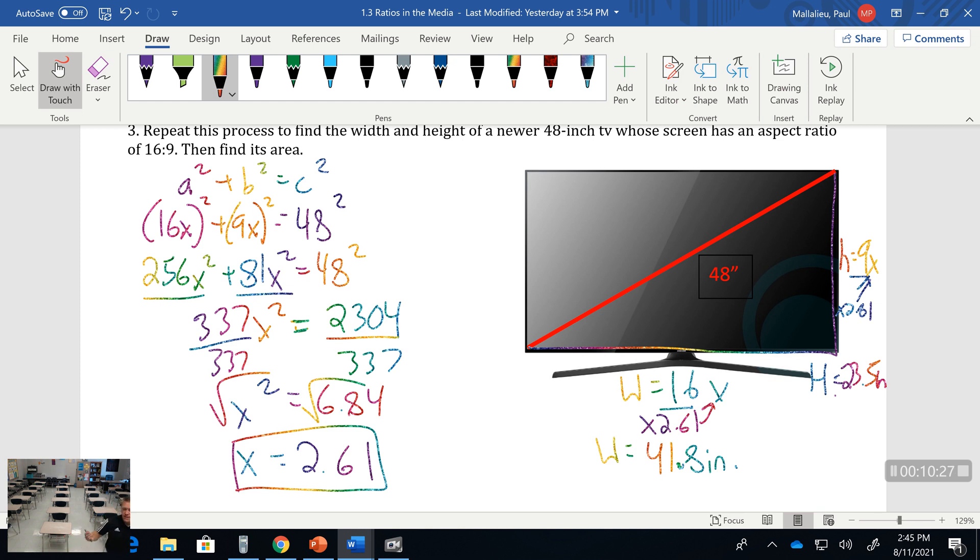That tells us that the 48 inch TV - if you have somewhere you're trying to put it like an area on the wall or you're measuring out - you're looking at 41.8 inches wide to make sure that it's centered or fits in a certain area. The height is going to be 23.5 inches. That's lesson one and we will have one more lesson with changing tires.